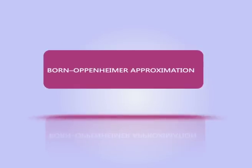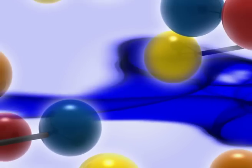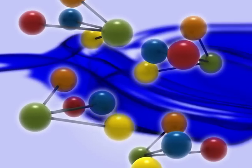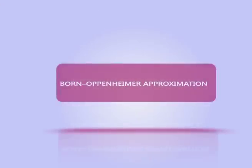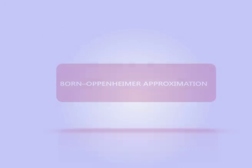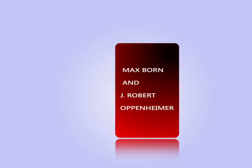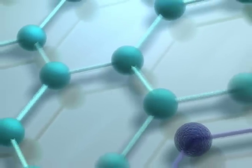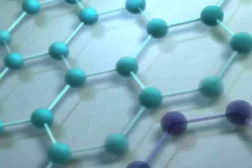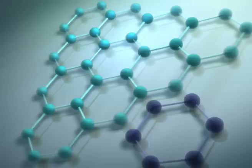Born-Oppenheimer approximation in quantum chemistry: the computation of the energy and the wave function of an average size molecule is a formidable task that is alleviated by the Born-Oppenheimer approximation, named after Max Born and J. Robert Oppenheimer. For instance, the benzene molecule consists of 12 nuclei and 42 electrons.